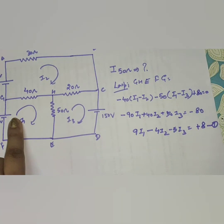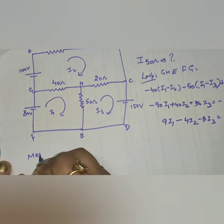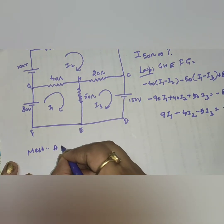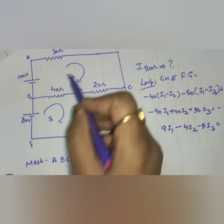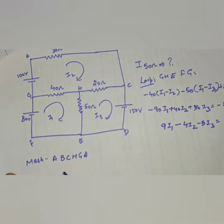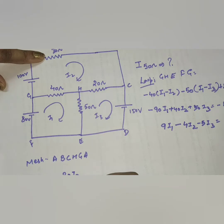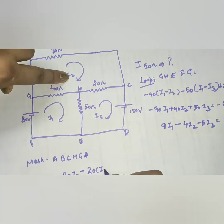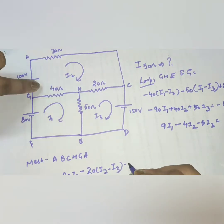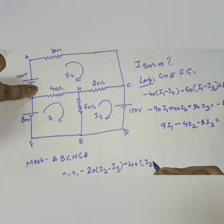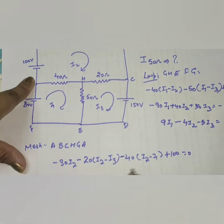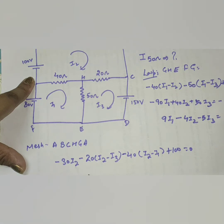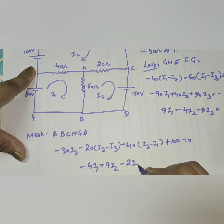For the second mesh, loop A-B-C-H-G-A with current I2. Starting from A, the KVL equation is: minus 30·I2 minus 20·(I2 minus I3) minus 40·(I2 minus I1) plus 100 plus 9·I2 minus 2·I3 equals 10. That gives us equation 2.